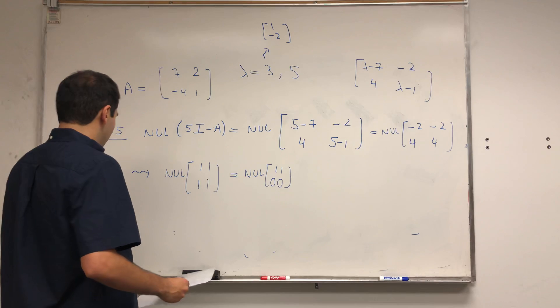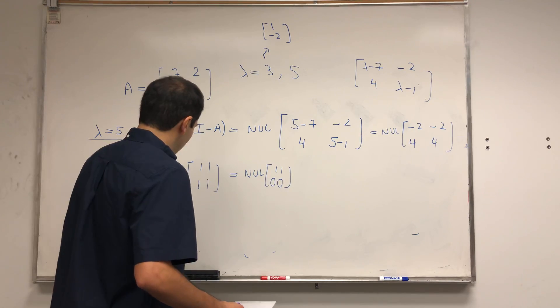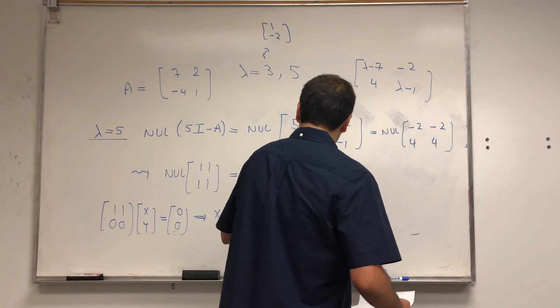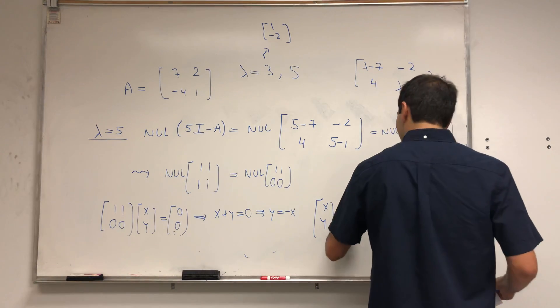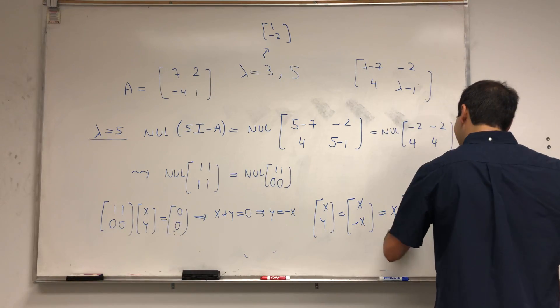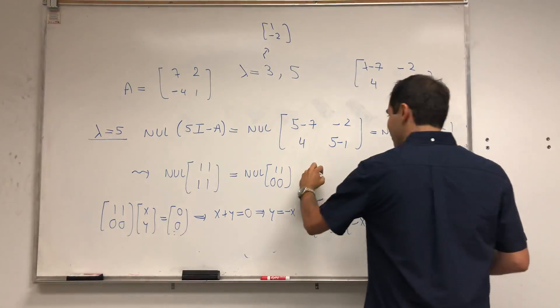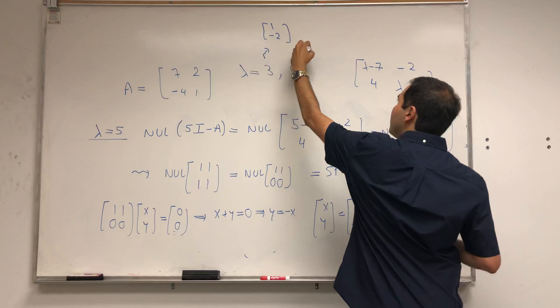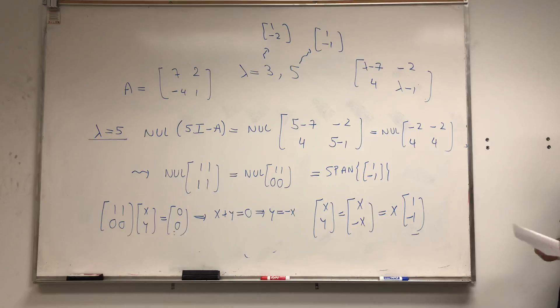Now let's solve the equation. This, x, y equals 0, 0. That just means x plus y equals 0. So y equals minus x. And therefore, x, y equals x minus x. That's x times 1 minus 1. And therefore, what this tells us is, the null space is just a span of 1 minus 1. In other words, an eigenvector corresponding to lambda equals 5 is 1 minus 1.